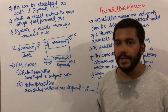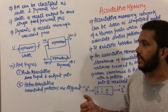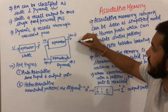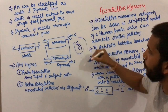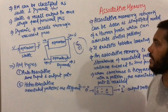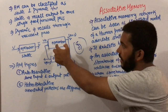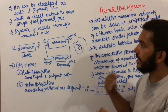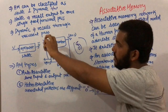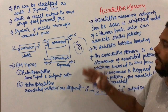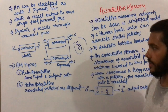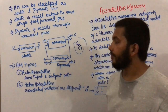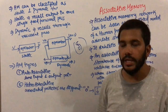For example, consider a fingerprint scanner. If you have seen how a fingerprint scanner works, it asks you several times to touch the fingerprint sensor. First it takes the input, generates some output, then based on that it generates another output, and this process goes on until it finds a complete match. These are the two types of associative memory.